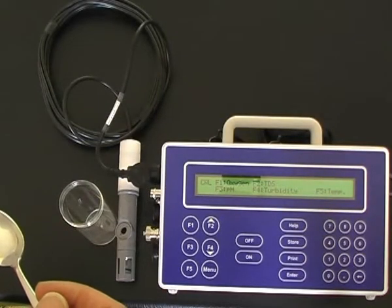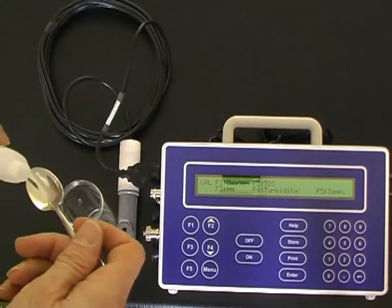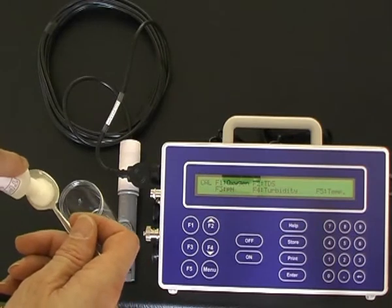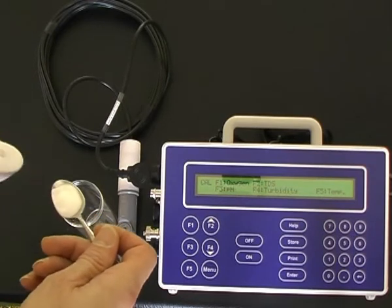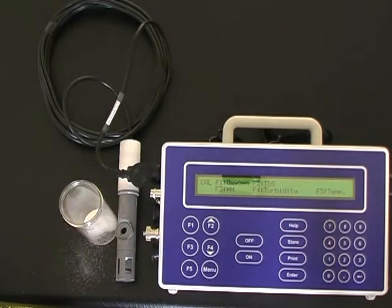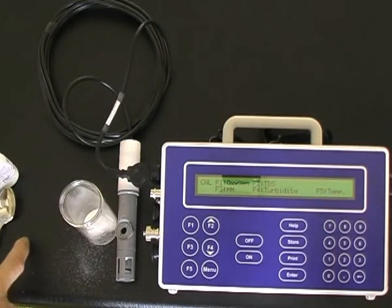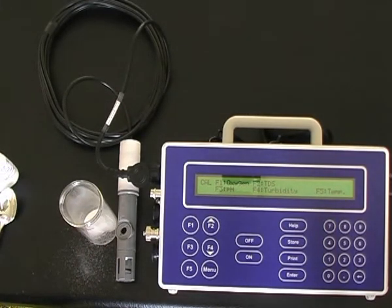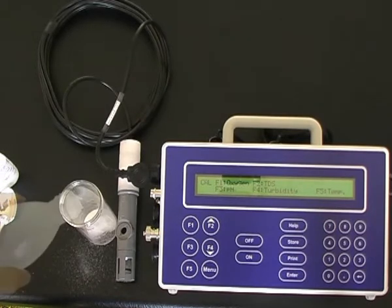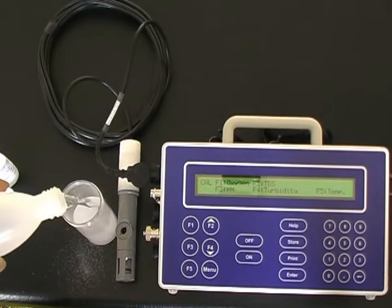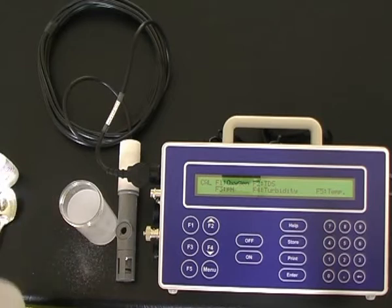To prepare the sodium sulfite zero solution, pour a teaspoon of sodium sulfite powder into a jar and add 100 mils of water. Stir the solution until the powder is completely dissolved.